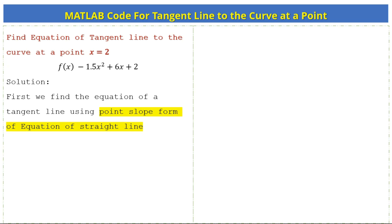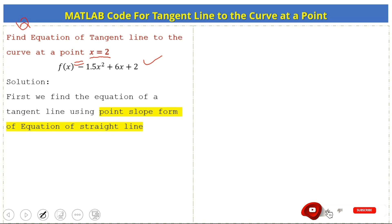We have a question: find the equation of a tangent line to the curve at point x equal to 2, where the given function is f(x) = -1.5x² + 6x + 2.